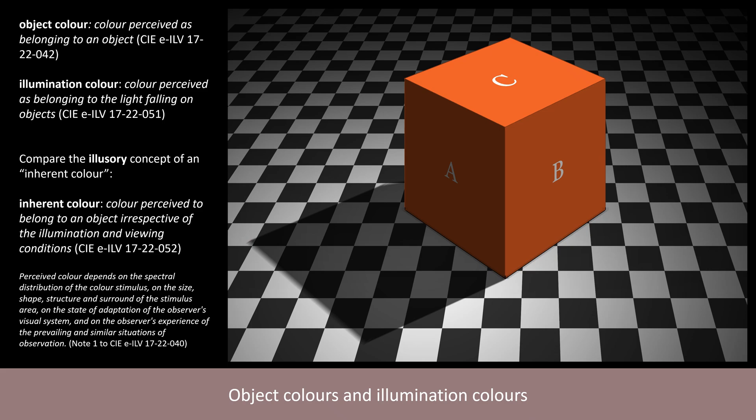Object colours, like all perceived colours, often vary depending on the illumination, the viewing conditions, and the observer. Light reflecting objects exhibit a high degree of constancy of object colour at different intensities of the same illumination, which is why these colours are perceived as belonging to the object.